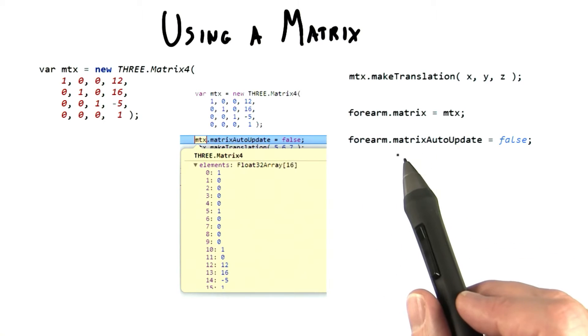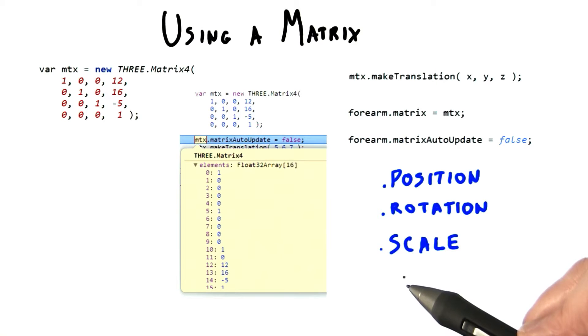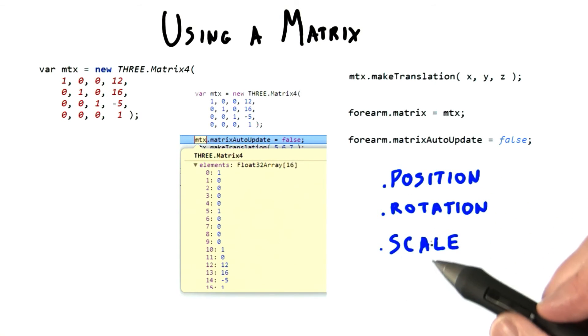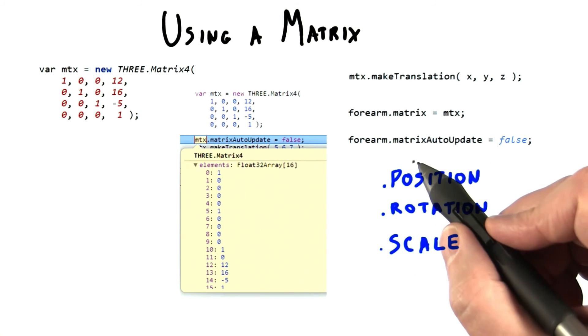However, you also need to set matrix auto update to false. Remember that 3JS has its own transform system built in: position, rotation, and scale. By setting matrix auto update to false, you say don't use this, but use this matrix instead.